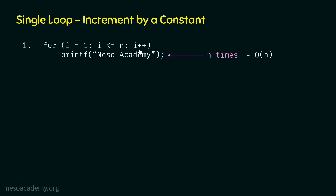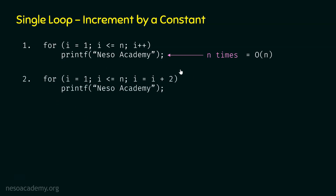But what if the increment is done by a constant other than 1? In this new example loop, instead of i++, we now have i = i + 2. This means the increment is done by the constant 2, not 1. Do you think the time complexity still remains the same — is it still O(n)? The increment is done by 2, so the loop will not run exactly n times. Because initially i is 1, then it will be 3, then 5, then 7, since the increment is done by 2 every time. Hence, this loop will not run exactly n times.